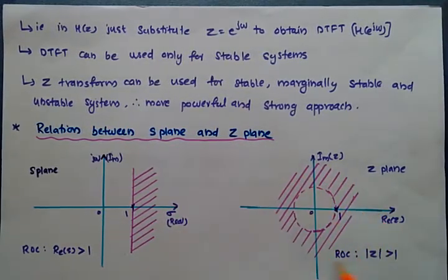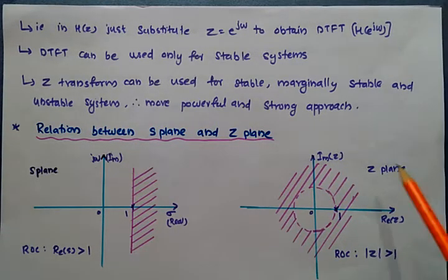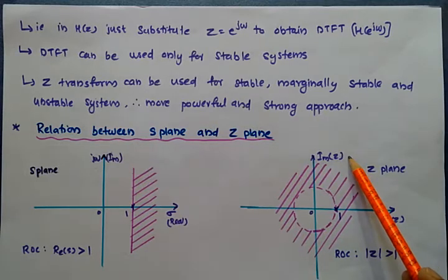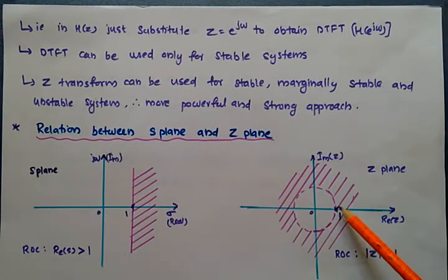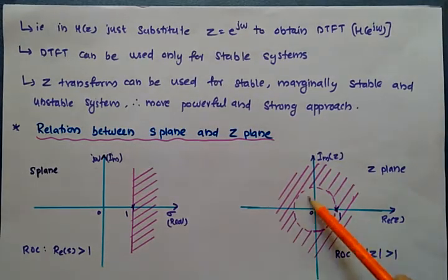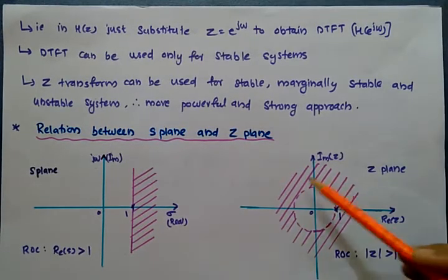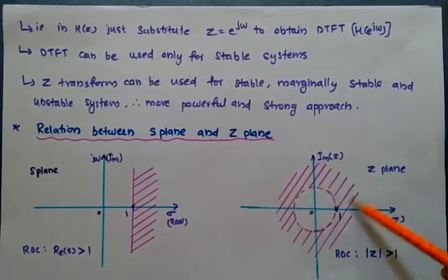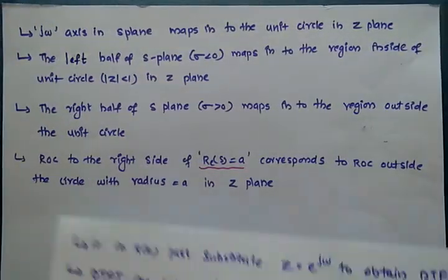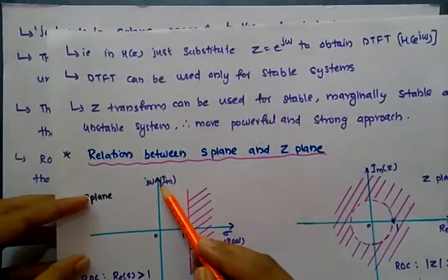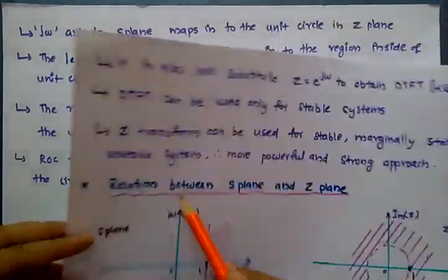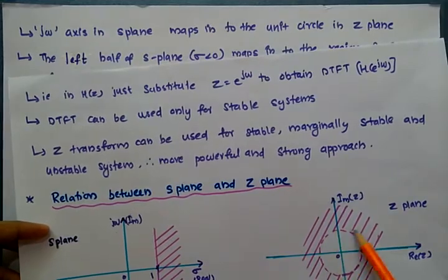This figure represents the Z-plane, where the real part of Z is on the x-axis and the imaginary part of Z is on the y-axis. This is the unit circle with radius 1. The ROC is taken as |Z| greater than 1 — that is, the region of convergence is outside the circle with radius 1. The j omega axis in the S-plane maps into the unit circle in the Z-plane.